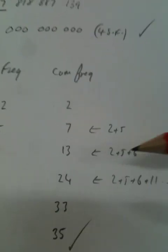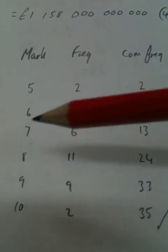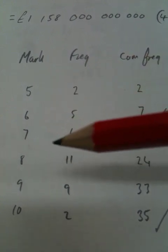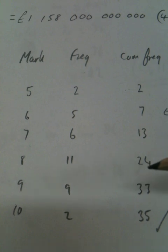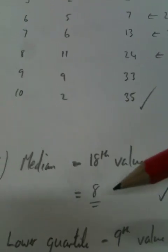17 on the left, add on 1 in the middle, add on another 17, comes to 35. So looking for the 18th value. Because that's the 1 after the first 17 values. So looking up here. The first 2 values are 5. The first 7 values are 5 or 6. The first 13 values are 5, 6 or 7. Then the 14th all the way up to the 24th value is 8. So the median is 8.